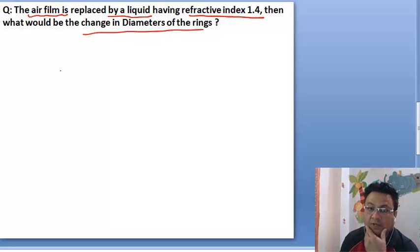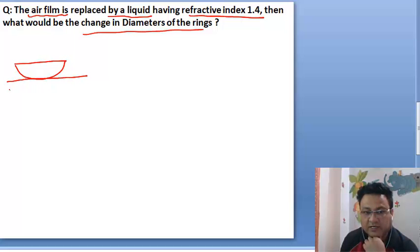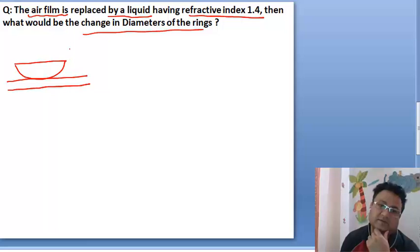So let us draw a diagram to understand what it is saying. We know that in Newton's ring setup there is a plano-convex lens and then there is a glass plate like this.